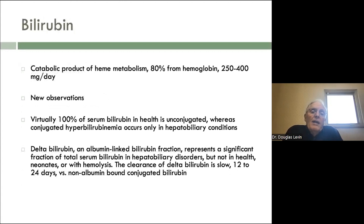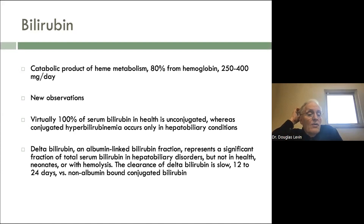Bilirubin is a catabolic product of heme metabolism — 80% from hemoglobin, 250 to 400 milligrams per day. Virtually 100% of serum bilirubin in health is unconjugated. You won't see that on your lab because the tests themselves are not very accurate. Whereas conjugated hyperbilirubinemia only occurs in hepatobiliary conditions. So even though it will tell you direct and indirect, you can't take that too seriously.